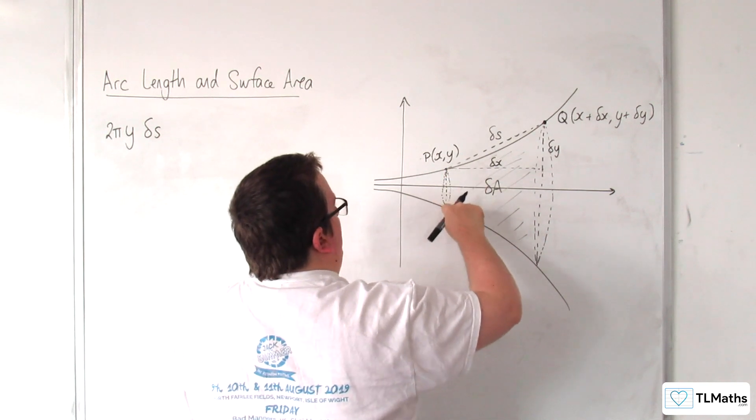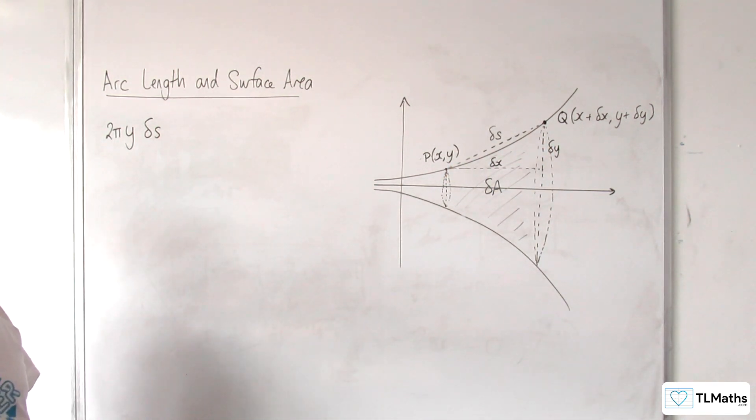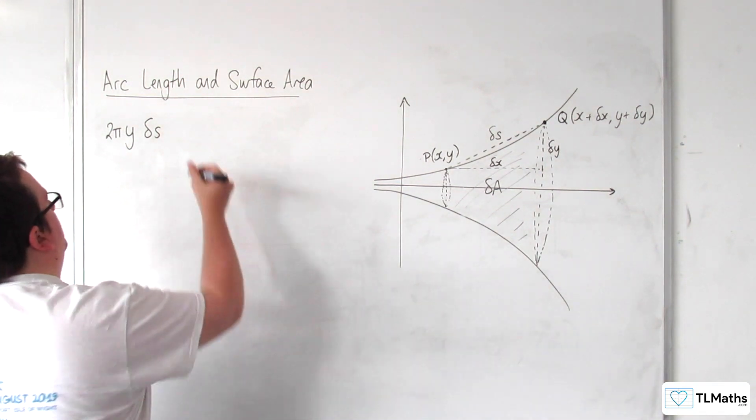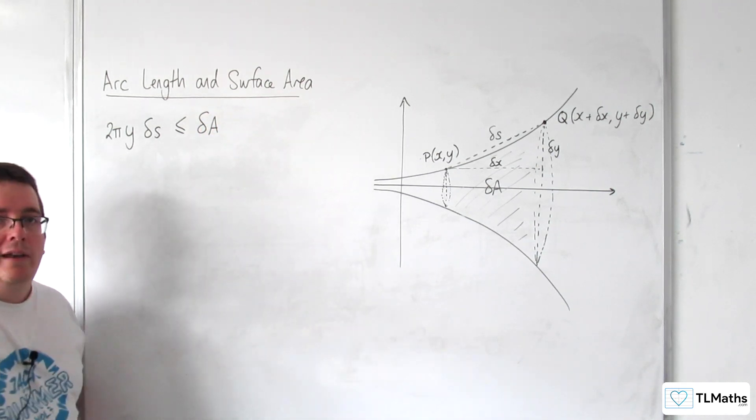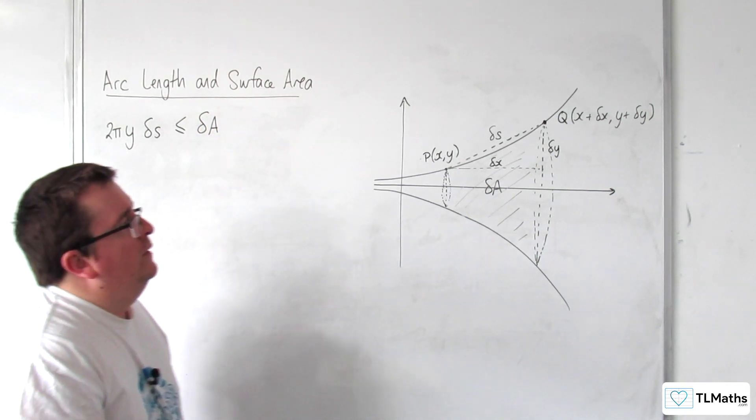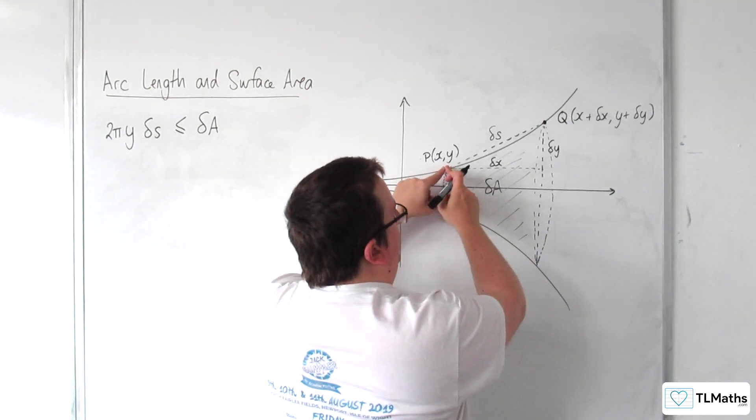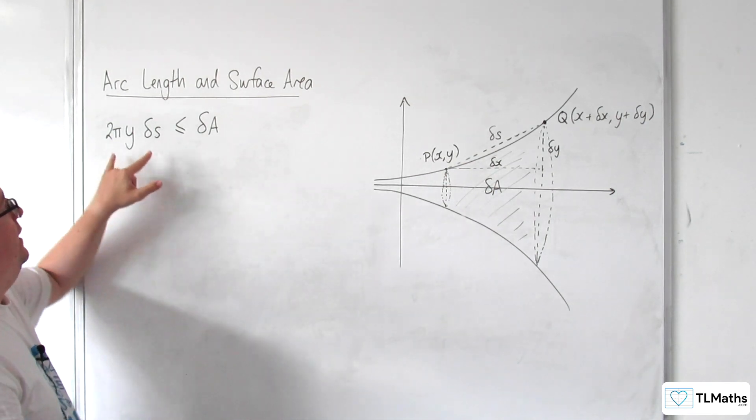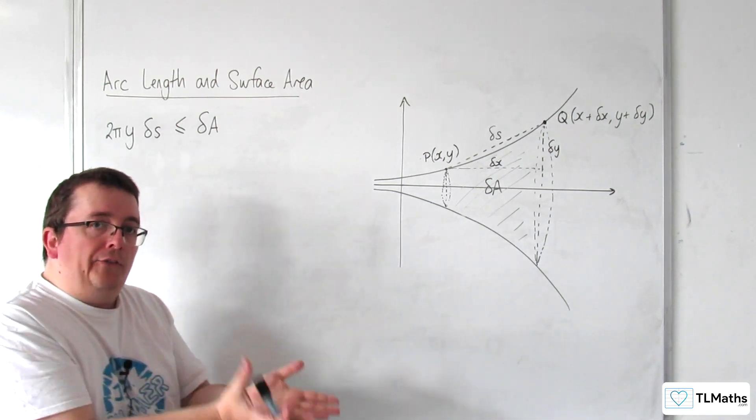So if I multiplied that circumference by that length, that would give me an estimate for delta A, but we can reasonably assume that that would be less than or equal to delta A. It won't be larger, because if that part of the curve was a straight line, then these two things would be identical. This would just be the surface area of a cylinder.